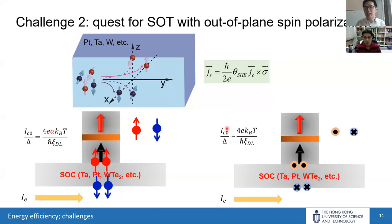For more details, check the 2000 paper by Jonathan Sun on single-domain STT switching, which clearly shows that with collinear simulation you have alpha, but without collinearity you do not. We ignore the field-like torque and only consider the damping-like torque for simplicity in this analysis.